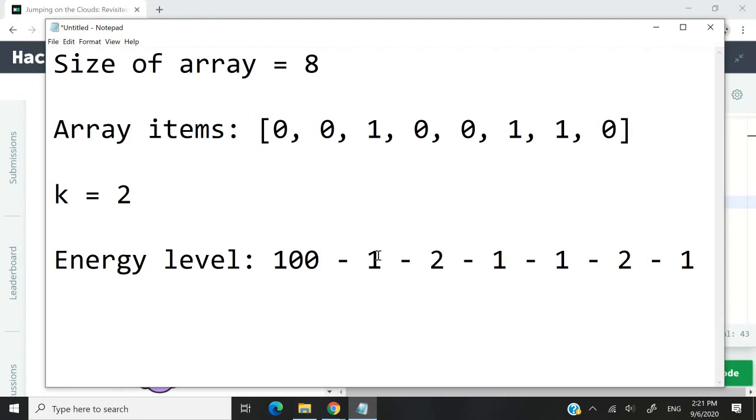100 minus one, 99. Minus two, 97. Minus one, 96. Minus one, 95. Minus two, 93. Minus one, 92. So what we need to return is this value here, 92.